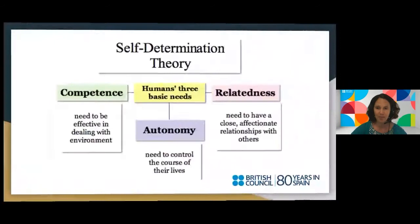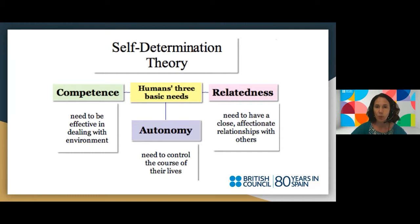Let's look at the theoretical framework for motivation. One framework is self-determination theory, which suggests that humans have three basic needs: relatedness — the need to have close, affectionate relationships with others; autonomy — the need to control the course of our lives; and competence — the need to be effective in dealing with the environment, which we can also equate with confidence.